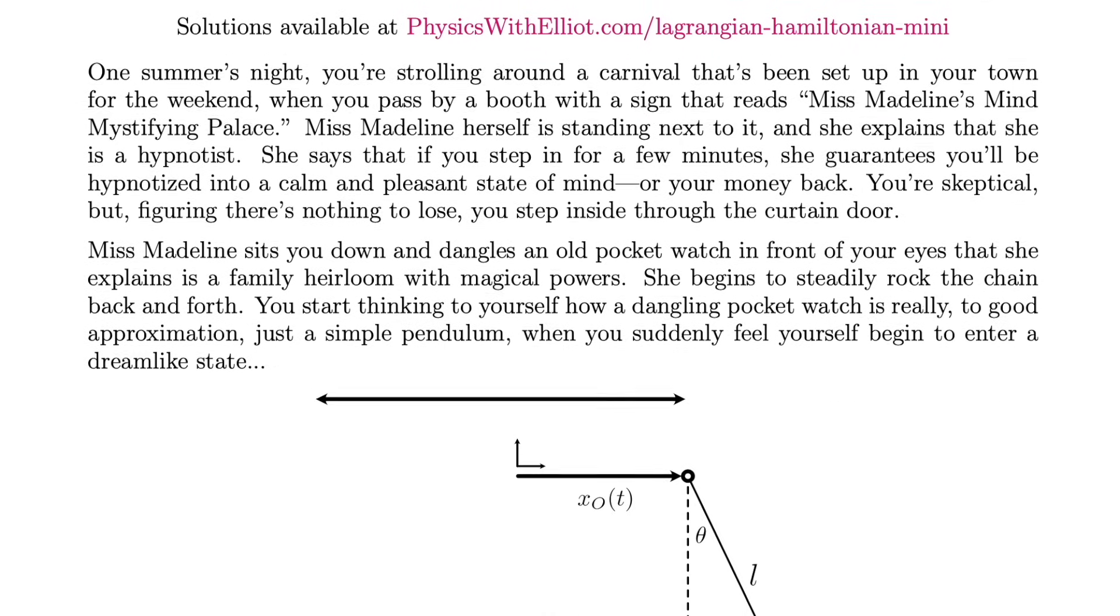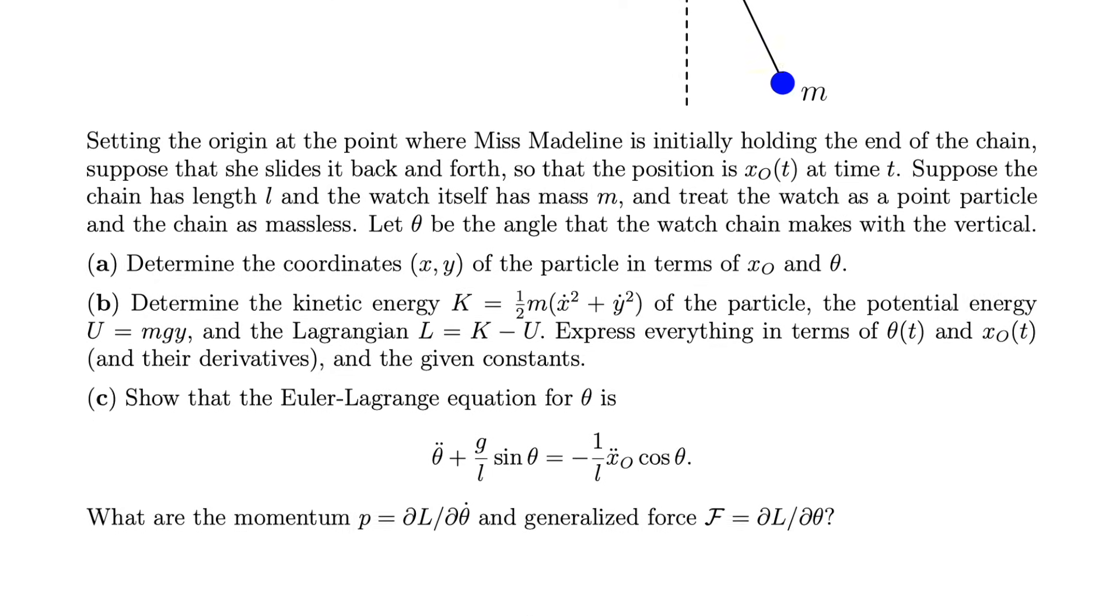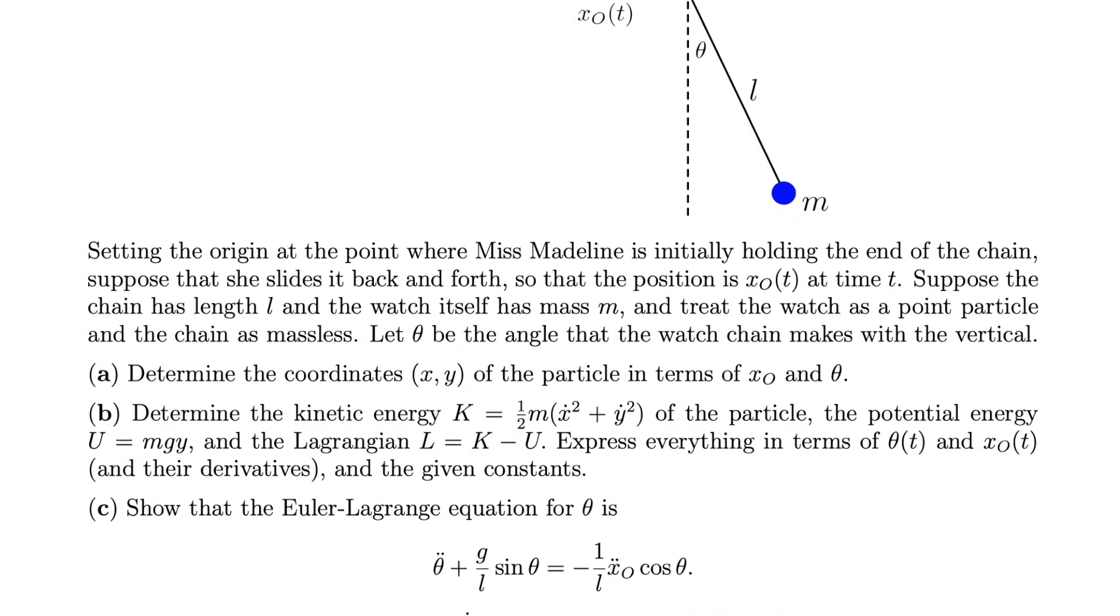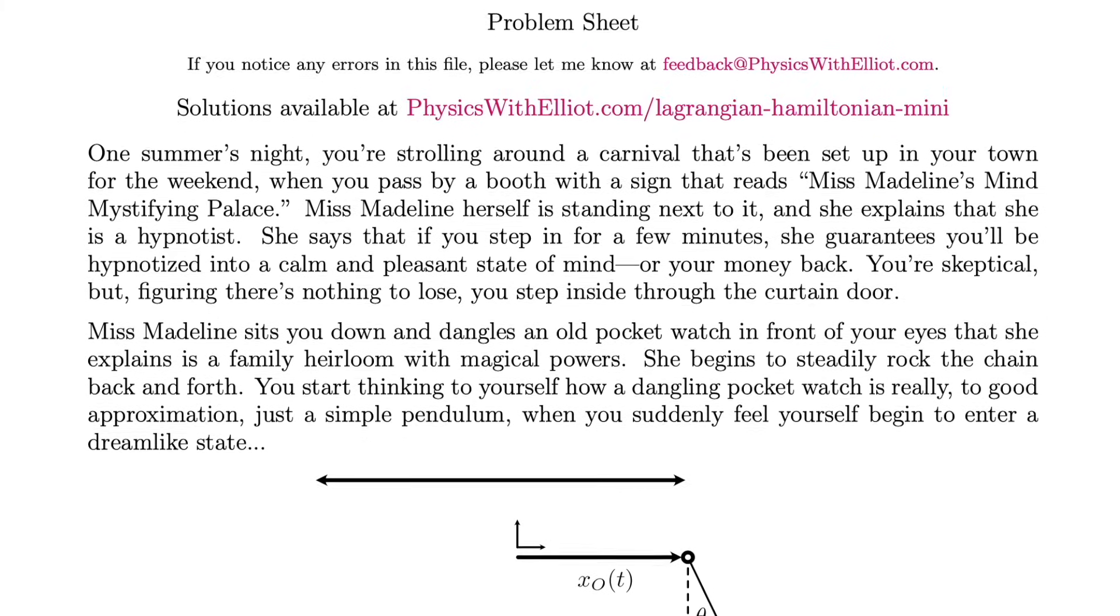Now if you really want to master these ideas, you've got to solve problems for yourself. So I've posted a problem sheet down below where you can apply the Lagrangian method to a challenging system. It's our pendulum again, this time in the guise of a pocket watch with magical powers. And now the pivot is being shaken back and forth by a mysterious hypnotist that you bump into at the town fair. So you should definitely go work that problem out to test and deepen your understanding. And I've also posted a link to the solutions which are available on my website.